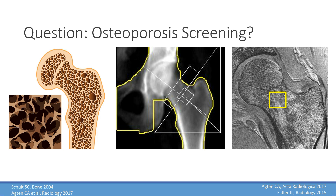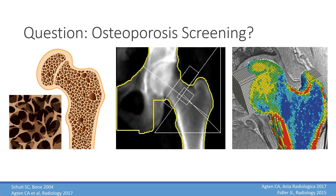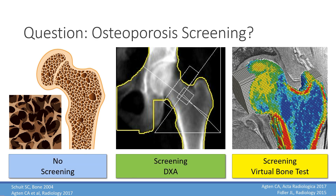With that we can make a 3D model of the bone and virtually test it — simulating falls to the hip, for example — to calculate which force is needed to fracture a specific bone. This is the so-called bone strength test, which is about 10 times more expensive than the DEXA test. To assess whether it's cost effective for screening, you can define three strategies: no screening, DEXA screening, and virtual bone test screening.